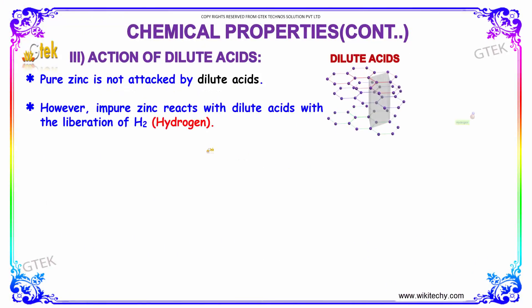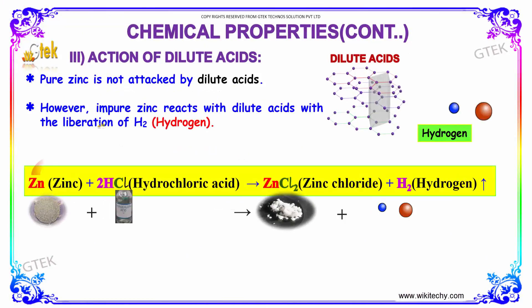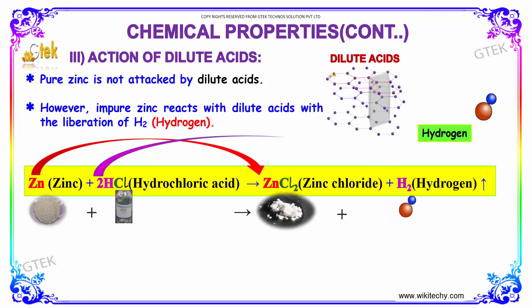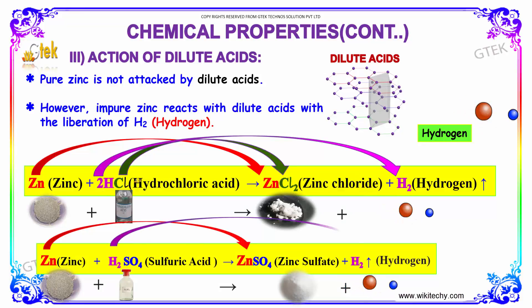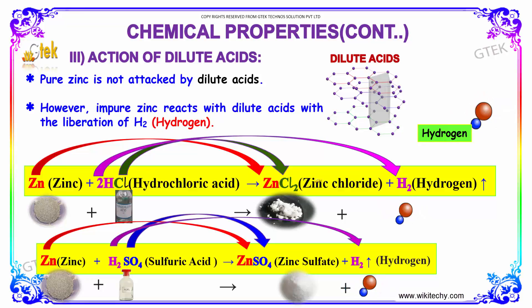Action of dilute acids: pure zinc is not attacked by dilute acids. However, impure zinc reacts with dilute acids with liberation of hydrogen. So zinc with HCl gives zinc chloride and hydrogen, and zinc with sulfuric acid gives zinc sulfate and hydrogen.